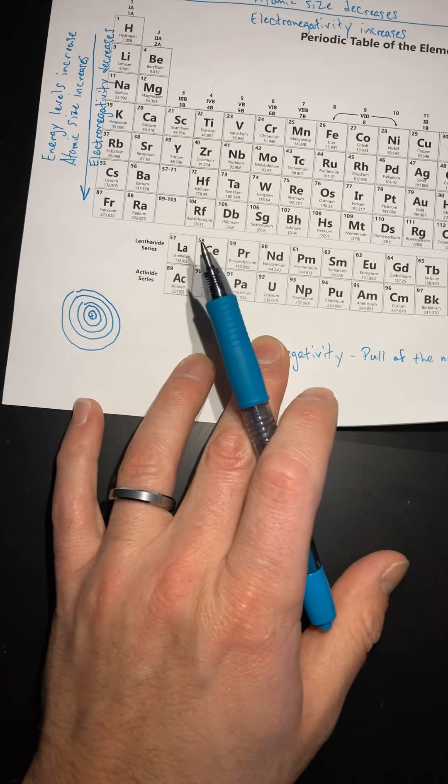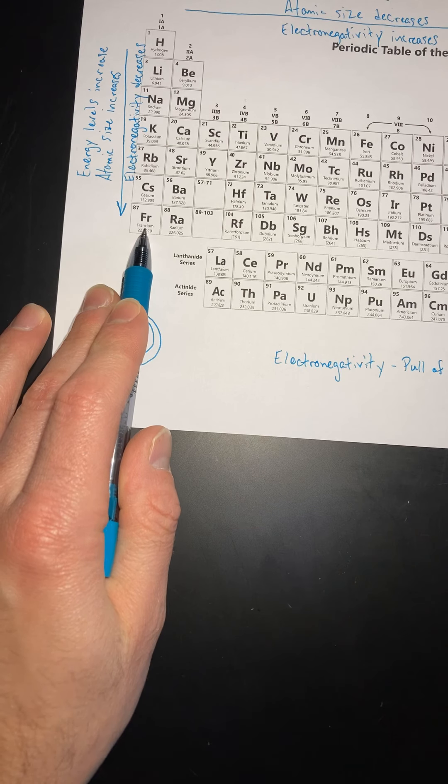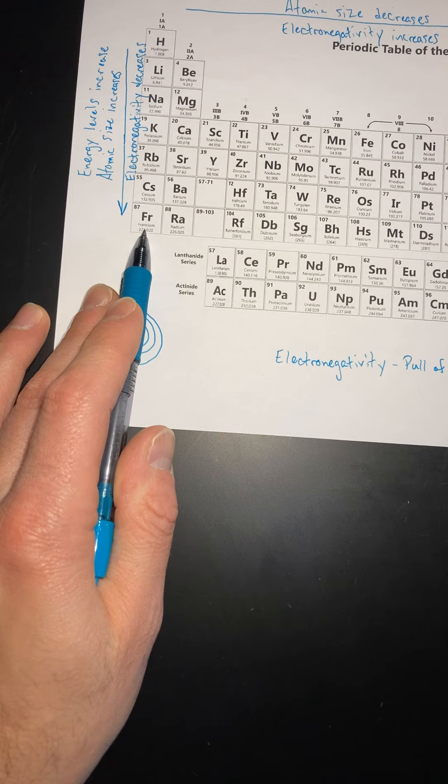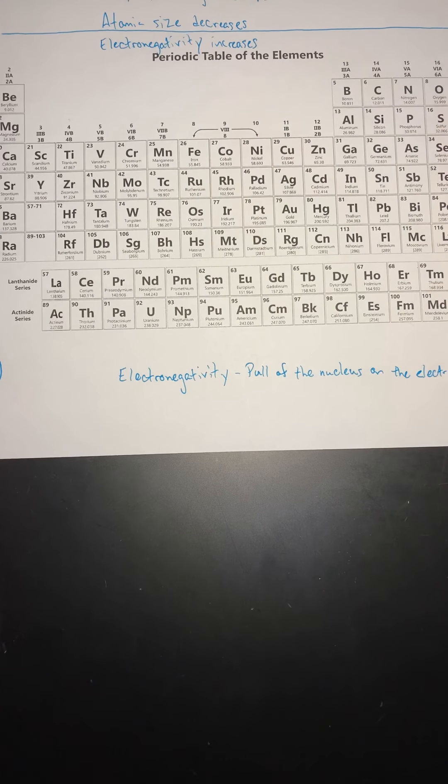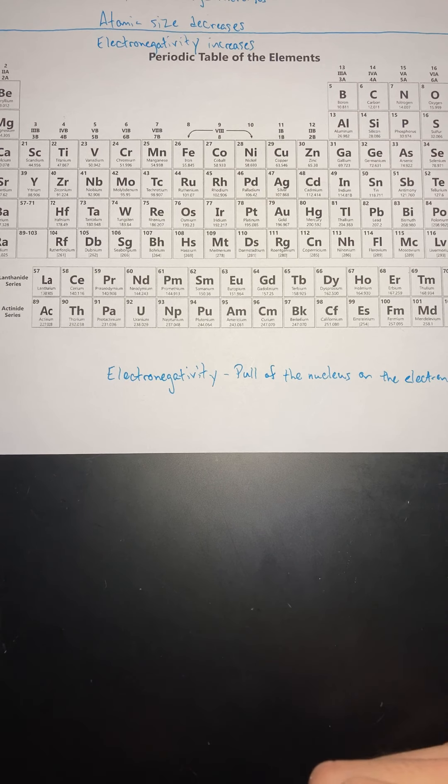Francium is going to be the least electronegative. There's going to be no other element on the periodic table that gives up an electron more easily than francium. That's why those two elements are the two most reactive elements on the periodic table. Okay?